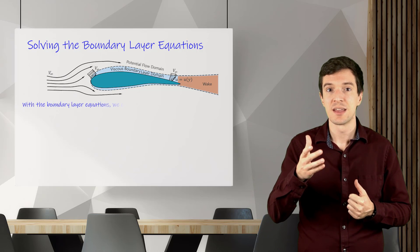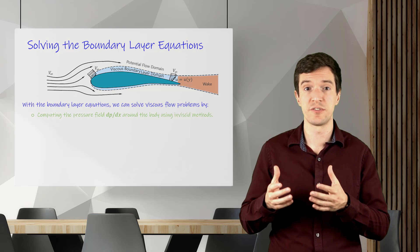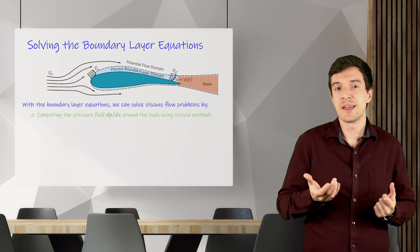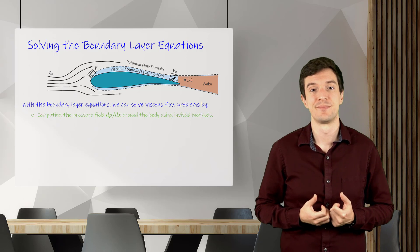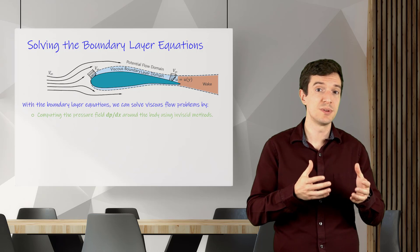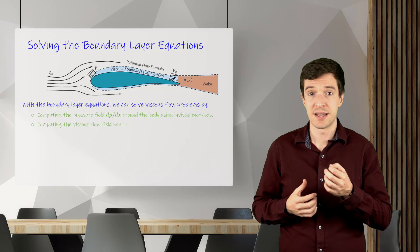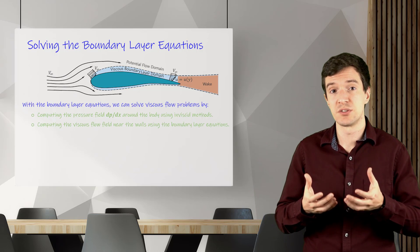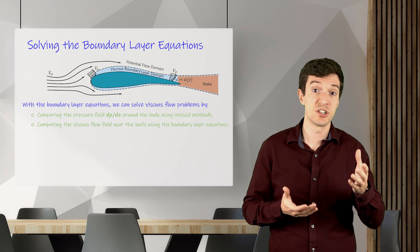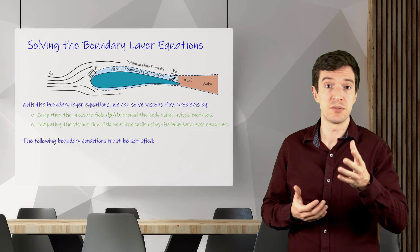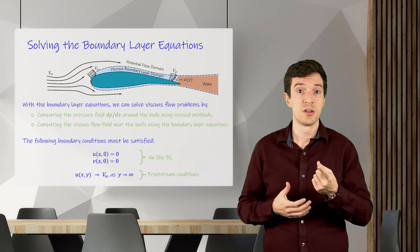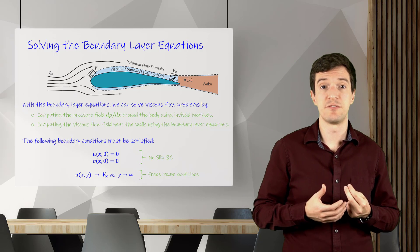This can be done first computing the pressure field around the body through any inviscid method, like the potential flow theory. This is because the flow outside the boundary layer is assumed to be inviscid. Then, the next step is to compute the viscous flow inside the boundary layer using the equations with just the right, and imposing specific boundary conditions, such as the no-slip condition at the wall and the free-stream condition at infinity.